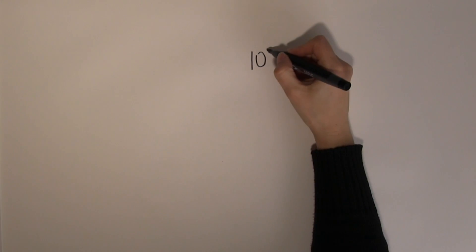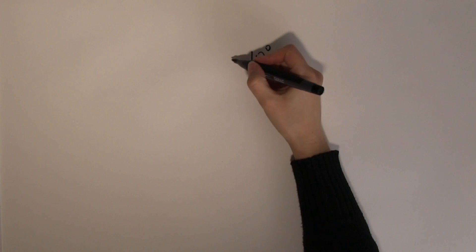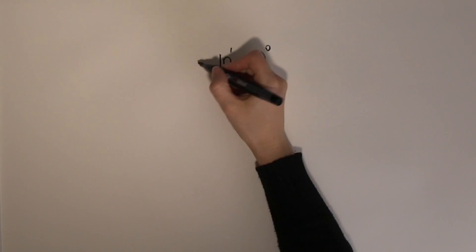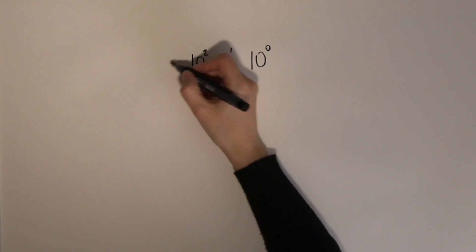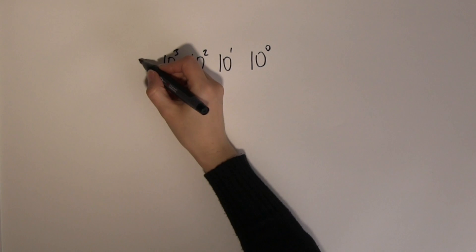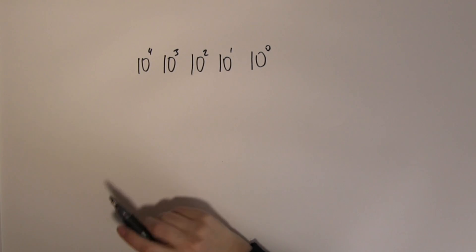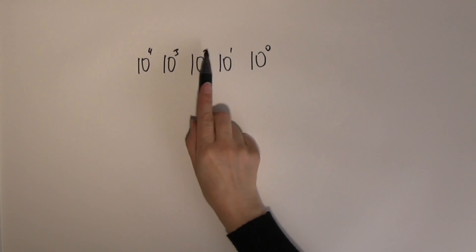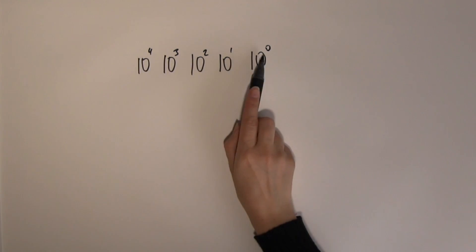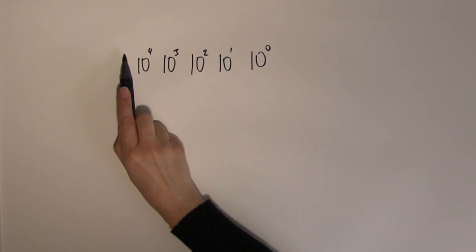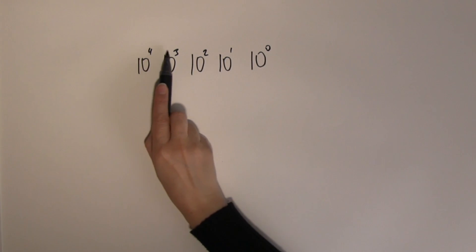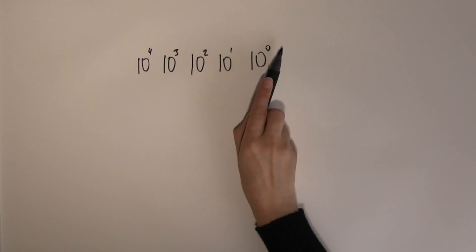Why do we need to know negative powers? When we talked about the decimal place value system, the smallest place value is ten to the zero, then ten to the one, ten to the two, ten to the three, and so on. The powers grow by one as we go from right to left, and decrease by one going from left to right.